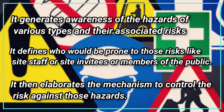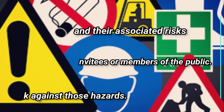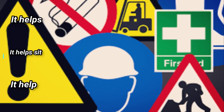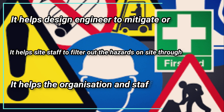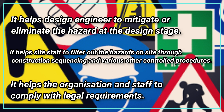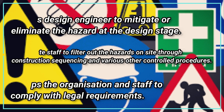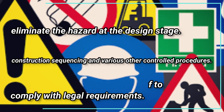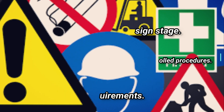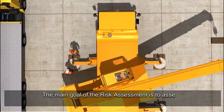It generates awareness of the hazards of various types and their associated risks. It defines who would be prone to those risks, such as site staff, site invitees, or members of the public. It elaborates the mechanism to control the risk against those hazards. It helps the design engineer to mitigate or eliminate the hazard at the design stage, and helps site staff to filter out hazards on site through construction sequencing and various other controlled procedures.